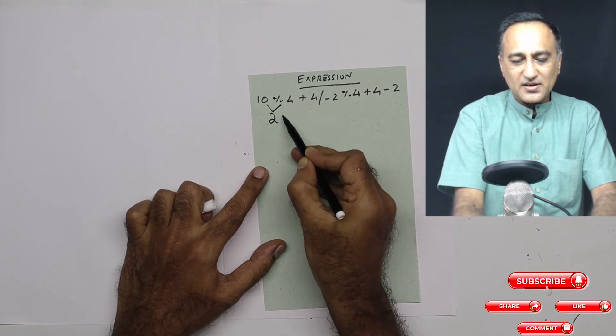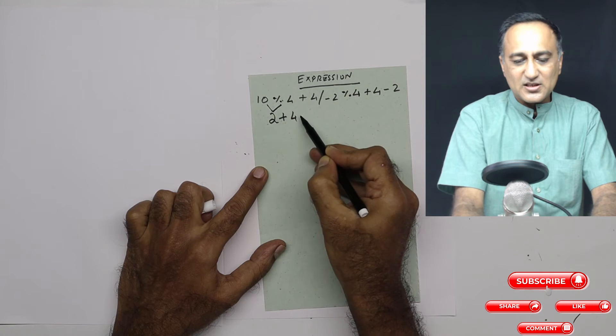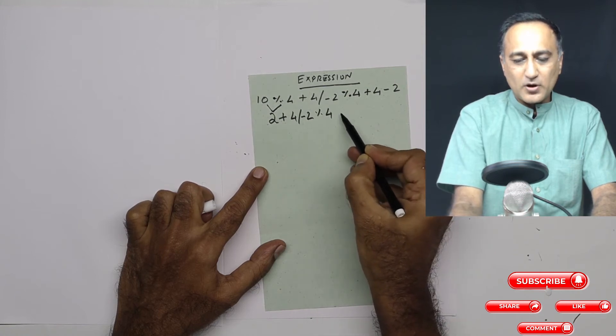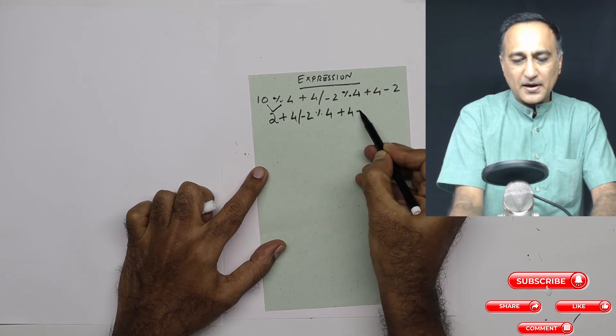So this brings the result here. Then this is 4 upon minus 2 as it is, mod 4 plus 4 minus 2.